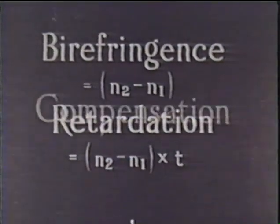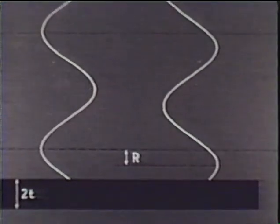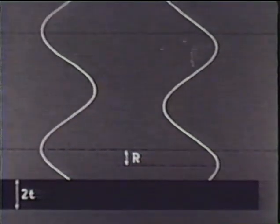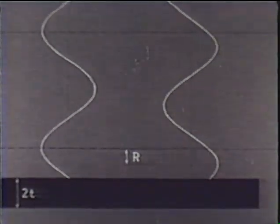The retardation can be measured by means of an effect called compensation. Here is a crystal of thickness 2t which has caused a retardation of r between the two vibrations in light passing through it.